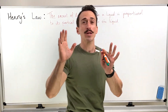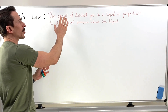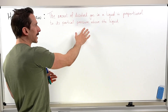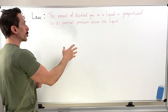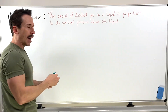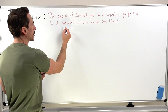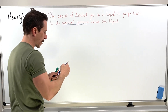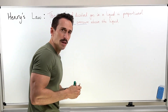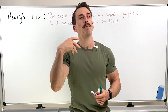Henry's law states that the amount of dissolved gas in a liquid is proportional to its partial pressure above the liquid. The first thing to understand is partial pressure — we spoke about partial pressures when we looked at Dalton's law.